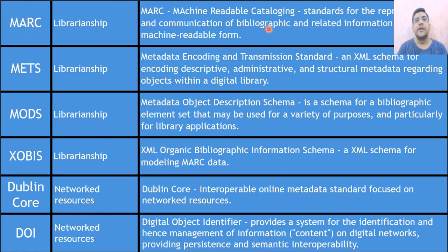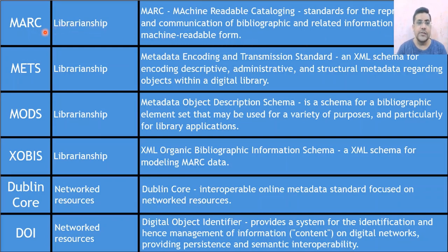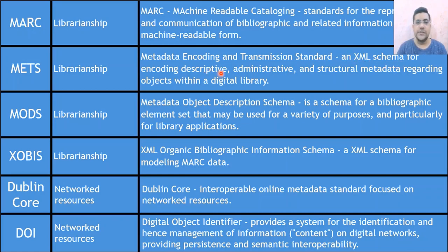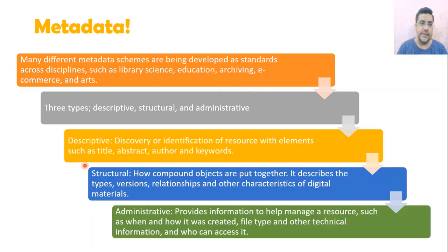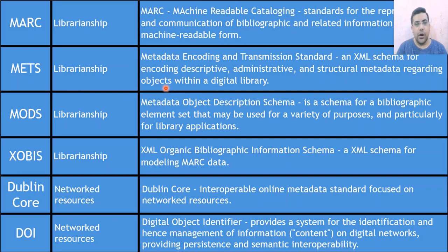MARC — Machine Readable Cataloging — is the standard for the representation and communication of bibliographic and related information in machine-readable cataloging form, used for librarianship. Another metadata scheme is METS — Metadata Encoding and Transmission Standard — also for librarianship. METS works in XML schema, encoding descriptive, administrative, and structural metadata for objects within a digital environment.